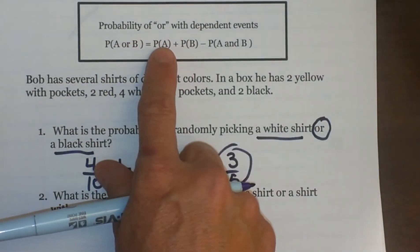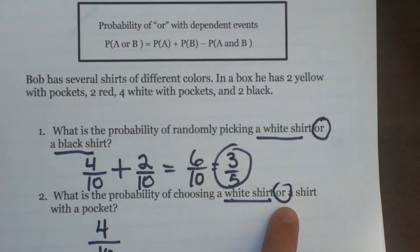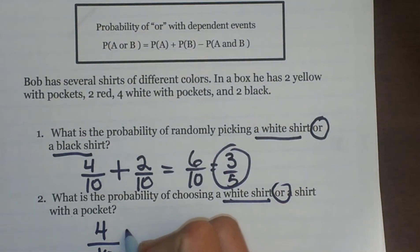We are going to do the probability of A, which is the same, it is still the white shirts. So I still have the probability of the first event happening, which is a white shirt, four tenths. But this time I am going to add to it, because it is an OR problem, a shirt with a pocket.